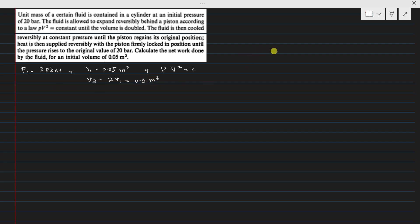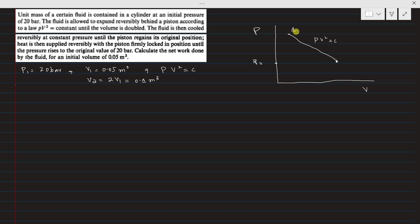Next we draw the PV diagram with pressure on the y-axis and volume on the x-axis. Initially the pressure is P1, then expansion takes place and the pressure drops to P2, following the law pv² = constant from state 1 to state 2, where the volume goes from V1 to V2. The fluid is then cooled reversibly at constant pressure until the piston regains its original position, meaning the system returns to volume V1 at constant pressure.